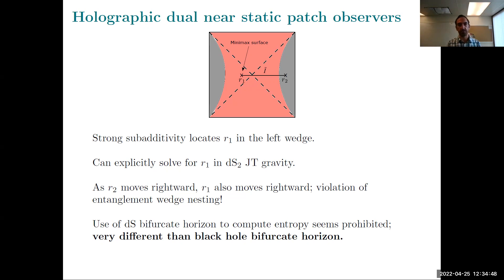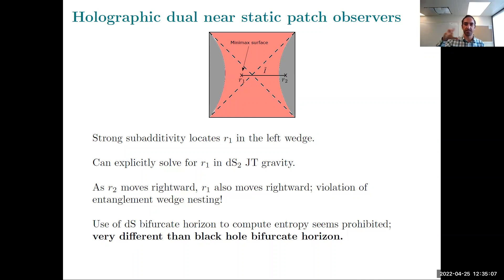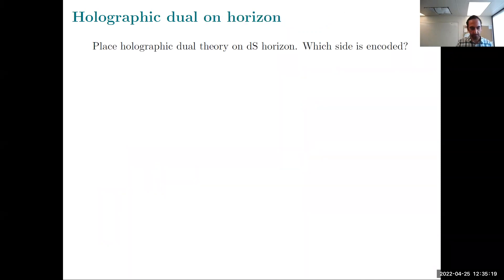The lesson from the first part of the talk: minimax surfaces are bad — don't use them as Ryu-Takayanagi surfaces or QES surfaces. They might be more related to something like complexity because they're maximal surfaces, but the nature of this maximal surface is different from the maximal surfaces discussed in the context of Python's lunch or complexity. So it really seems to be a different kind of surface that needs interpretation.